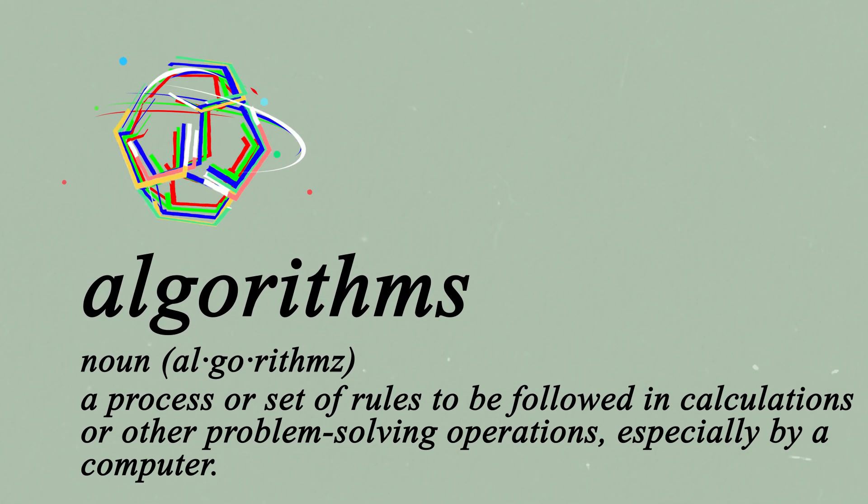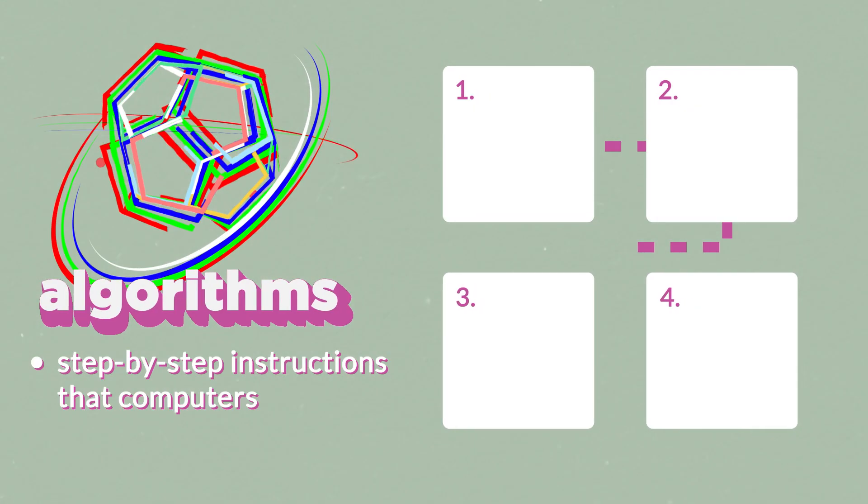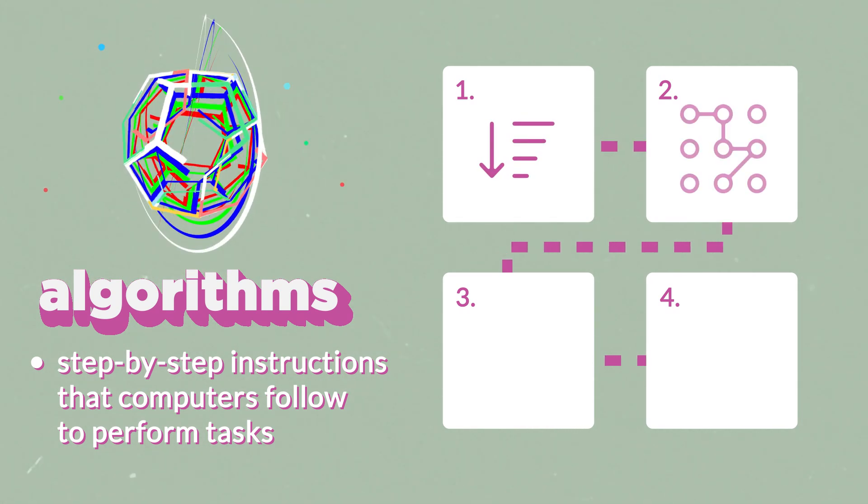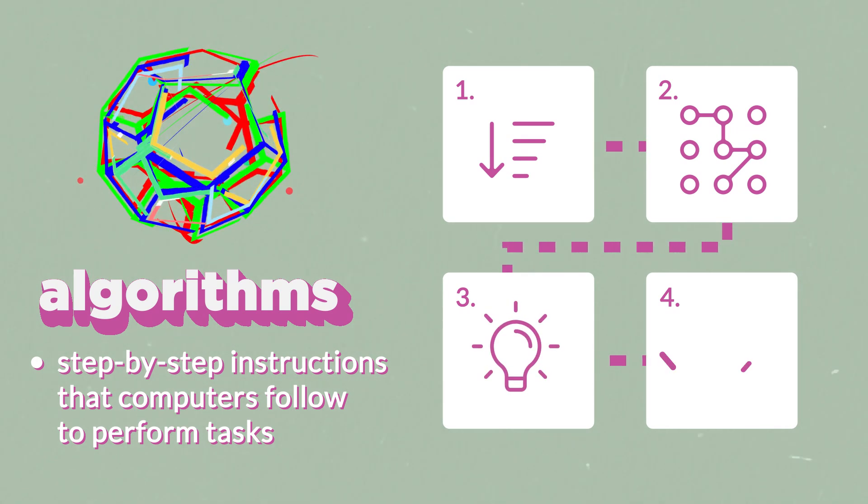Algorithms might seem like a fancy word, but they're simply step-by-step instructions that computers follow to perform tasks, such as sorting through data, finding patterns, and making predictions or decisions.